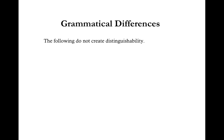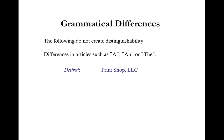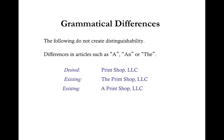Differences in articles such as a, an, or the also do not create distinguishability. For example, if your desired LLC name is Print Shop LLC and during the search you found The Print Shop LLC or A Print Shop LLC, these names are all the same in the eyes of the state, and therefore your desired LLC name would not be available for use. An alternative name would be Printing Solutions LLC.